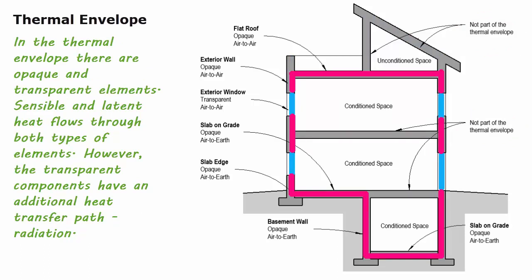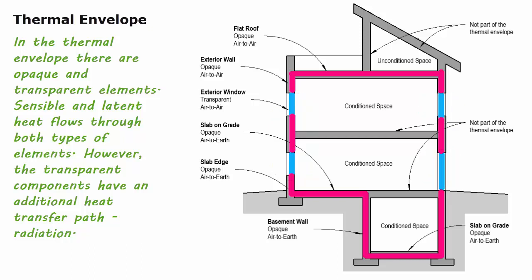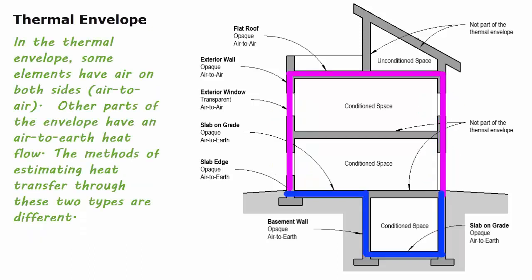Sensible and latent heat flows through both types of elements. However, the transparent components have an additional heat transfer path: radiation. In the thermal envelope, some elements have air on both sides, which is an air-to-air condition. Other parts of the envelope have an air-to-earth heat flow, and the methods of estimating heat transfer through these two types are different.